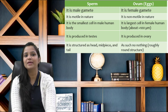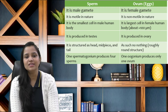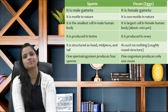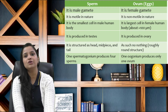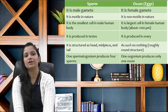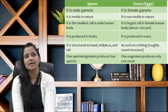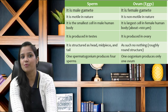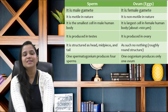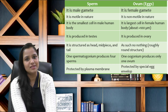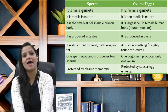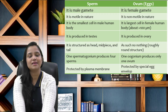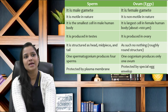The next important point is formation. One spermatogonium produces four sperms, while one oogonium produces only one ovum. Next is protection, which is a very important point. Sperms are protected by the plasma membrane, and ovums are protected by a special egg envelope.